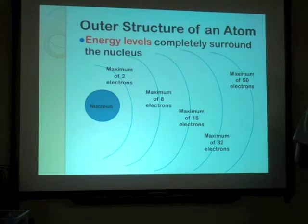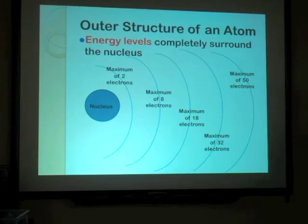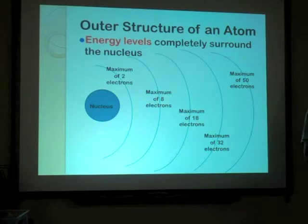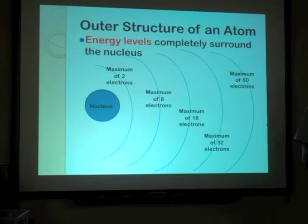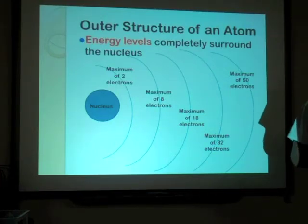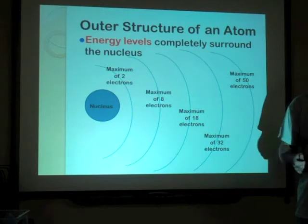The energy levels completely surround the nucleus. The first one can only contain two electrons — it's so close to the nucleus that there's not a whole lot of space going around it. It's kind of like the solar system: planets closer to the sun take less time to go around because they have a smaller orbit, like Mercury. So this first ring can only hold up to two electrons.